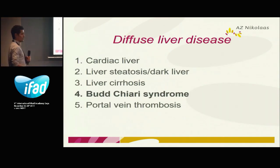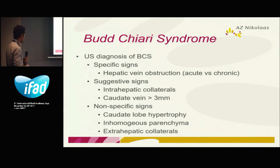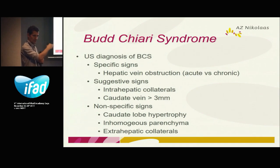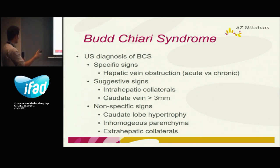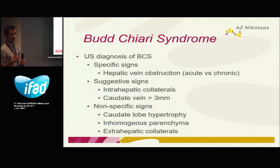Let's go to Budd-Chiari syndrome — quite important, especially because these patients will likely present with severe abdominal pain. With ultrasound we can see quite a lot. The specific signs: the nice hepatic veins will completely disappear, the patient will probably develop ascites, and the caudate lobe will also enlarge. So there are two cases where we see caudate lobe enlargement — cirrhosis and Budd-Chiari syndrome.